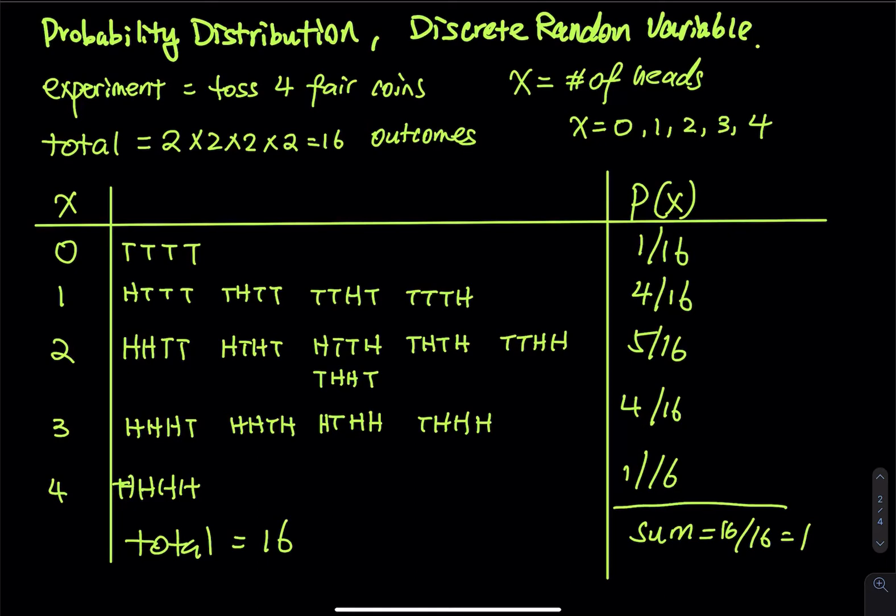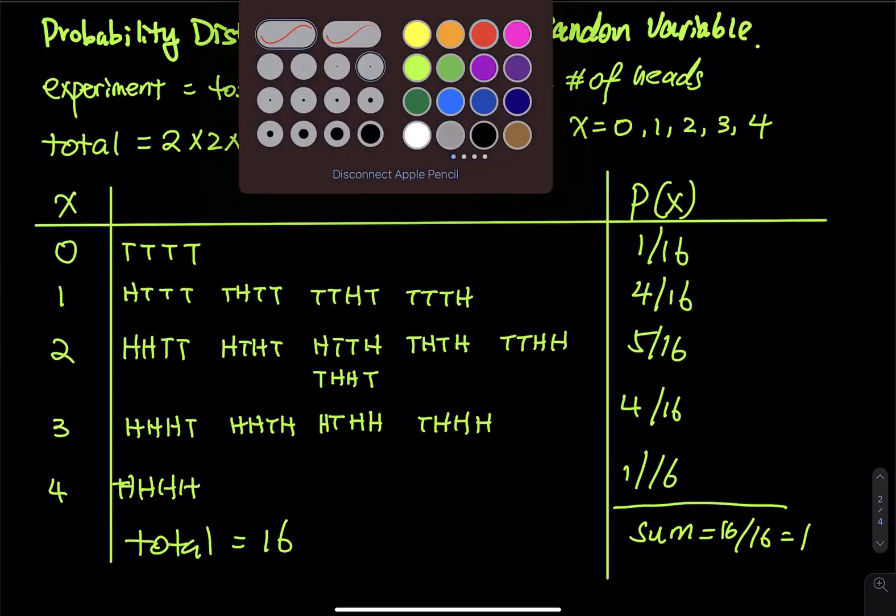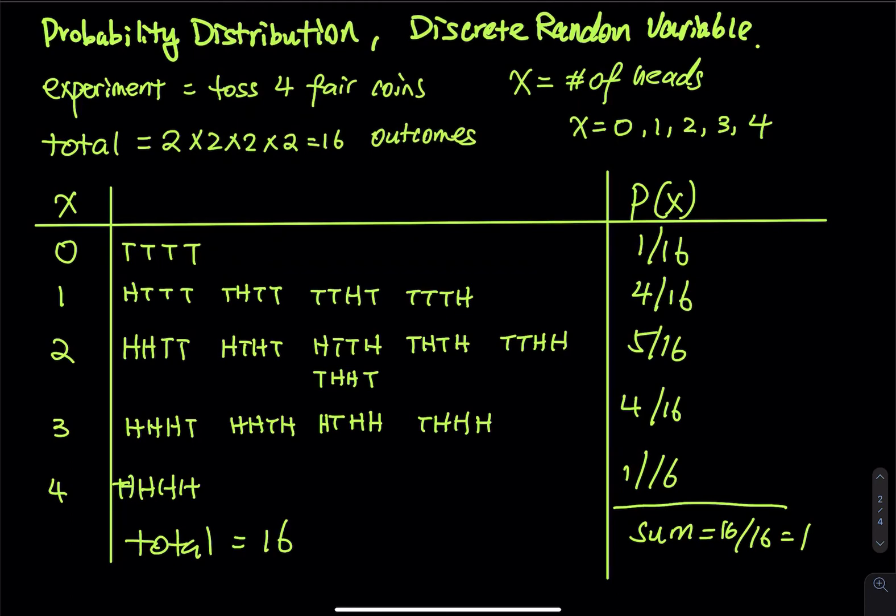And then number three is every X, X equals to zero has its probability, X equals to one has its probability, so on and so forth. So every X has its own probability. So what do we call this? This table is called the probability distribution, probability distribution of the discrete random variable X. So X has five distinct outcomes. And then we just distribute the sample space into this table.